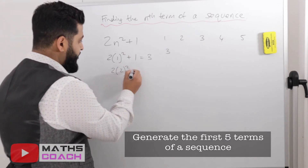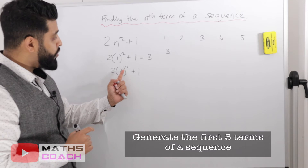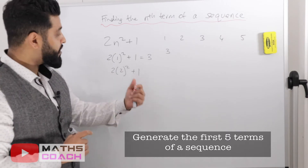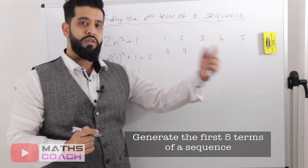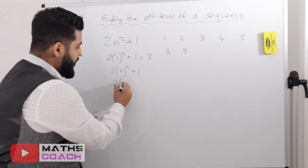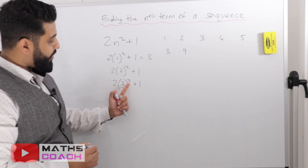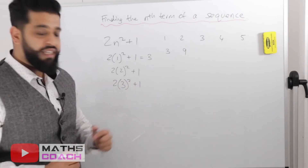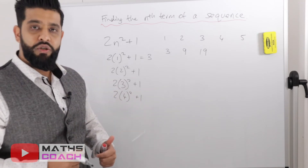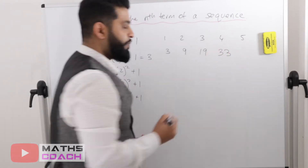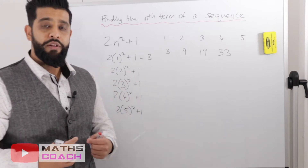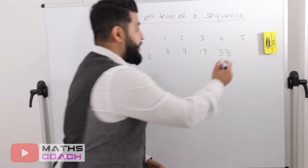For n equals 2: 2 squared is 4, times 2 is 8, plus 1 is 9. For n equals 3: 3 squared is 9, times 2 is 18, plus 1 is 19. For n equals 4: 4 squared is 16, times 2 is 32, plus 1 is 33. For n equals 5: 5 squared is 25, times 2 is 50, plus 1 is 51.